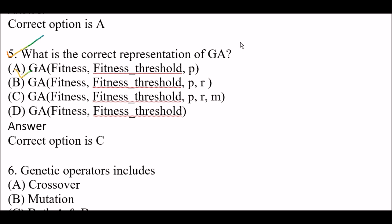What is the correct representation of genetic algorithm? Option A: Genetic algorithm includes fitness, fitness threshold values, and P — where P stands for random hypothesis. Option B: Genetic algorithm includes fitness, fitness threshold, P (random hypothesis), and R (random variable). Option C: Genetic algorithm includes fitness, fitness threshold, P, R, and M — where M stands for mutation.